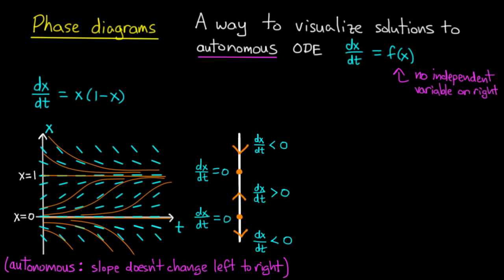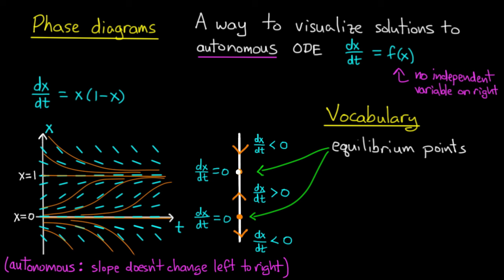So let me give you a little vocabulary that will help you talk about the phase line. The first thing is that these points where the solution is standing still, these are called equilibrium points. In our case it's x equals 1 and x equals 0. Equilibrium meaning that the solution is not changing.